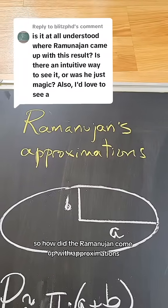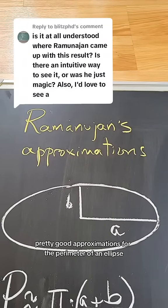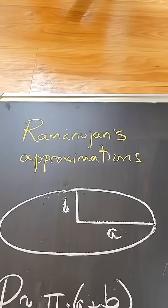So how did Ramanujan come up with pretty good approximations for the perimeter of an ellipse? Let's see.